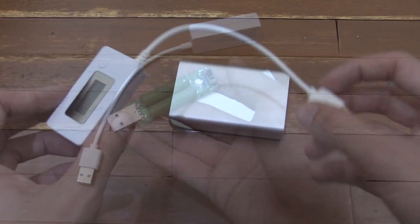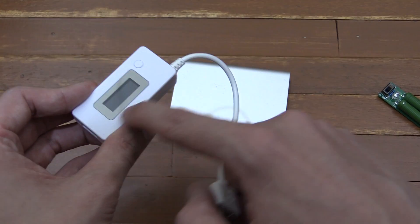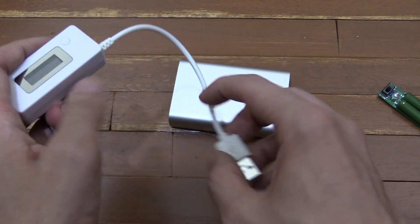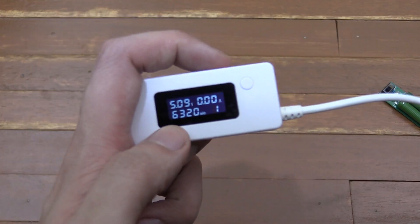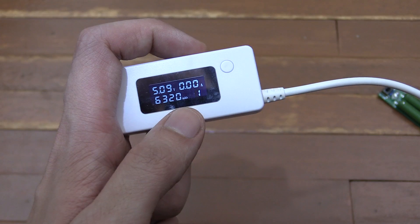Now the nice thing about this wattmeter is it does retain the values when power is lost, so we haven't lost any data. If I plug it into the power bank, you can see that we hit 6,320 milliamp hour.